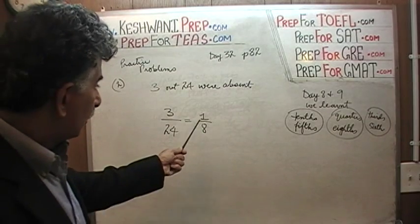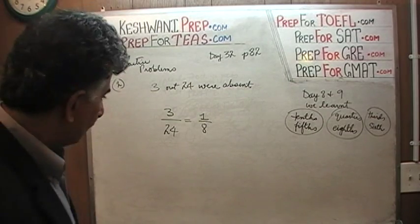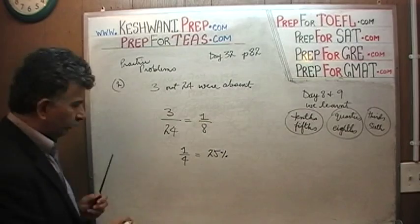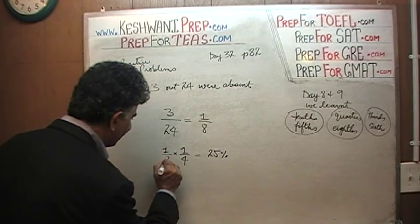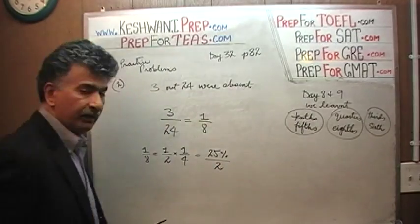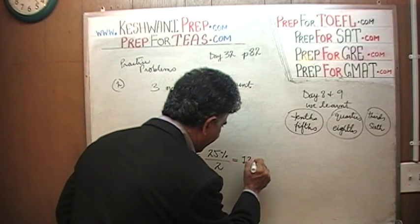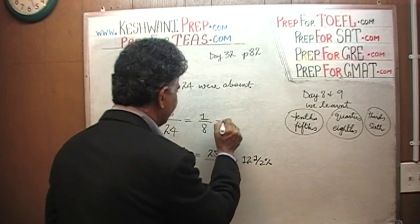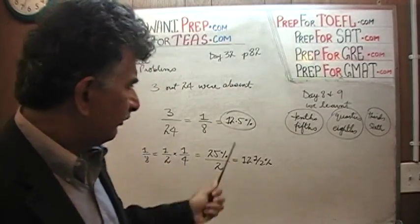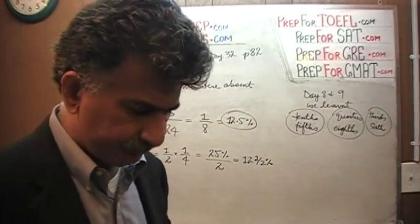Right here is the example. The question is: what is 1 eighth in terms of percentage? If you knew it by heart, we would have done it in a split second. We know that 1 quarter is equal to 25%, and 1 eighth is simply half of 1 quarter. The question is: what is half of 25? Half of 24 is 12, so half of 25 is going to be 12 and a half. The answer is 12 and a half percent, or 12.5%. A question like this should take no more than 3 to 5 seconds — 1 eighth is 12 and a half percent, we learned it already.